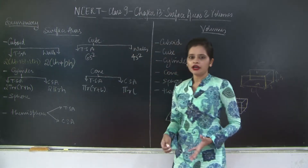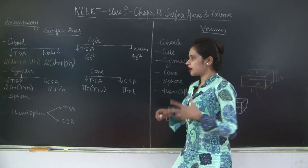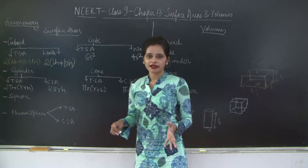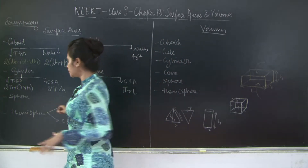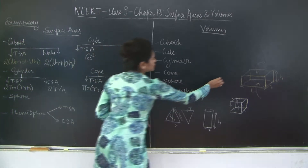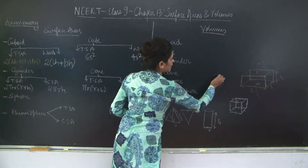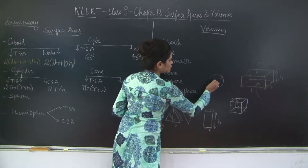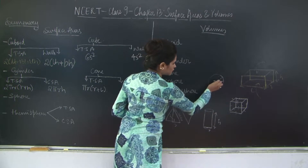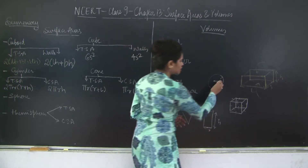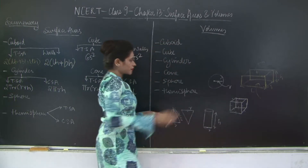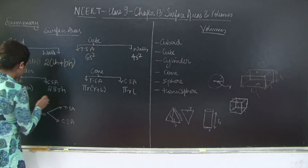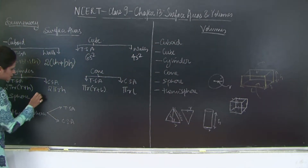For a sphere, the curved surface area and total surface area are the same, since there is no separate base. A sphere can be thought of as being made up of many circles with a common radius. The total surface area of a sphere is given by 4πR².